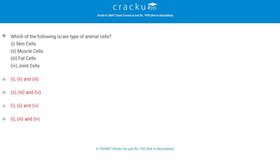Which of the following are types of animal cells? The correct answer is A. Animal cells include skin cells, muscle cells, and fat cells. These three are the types of animal cells.